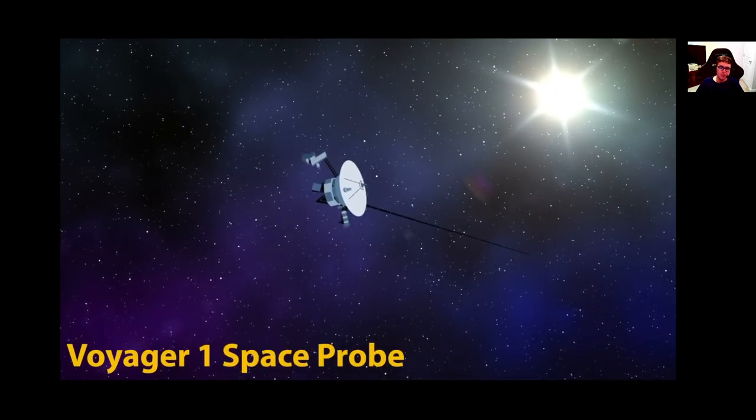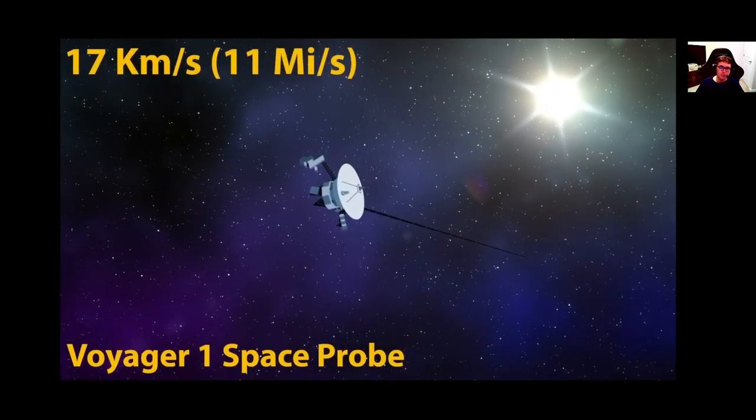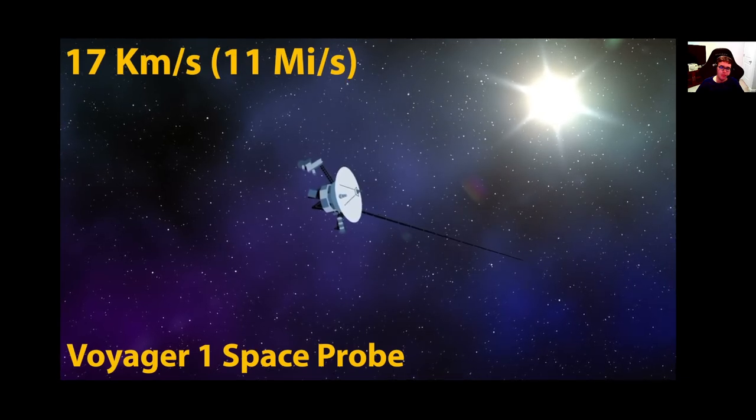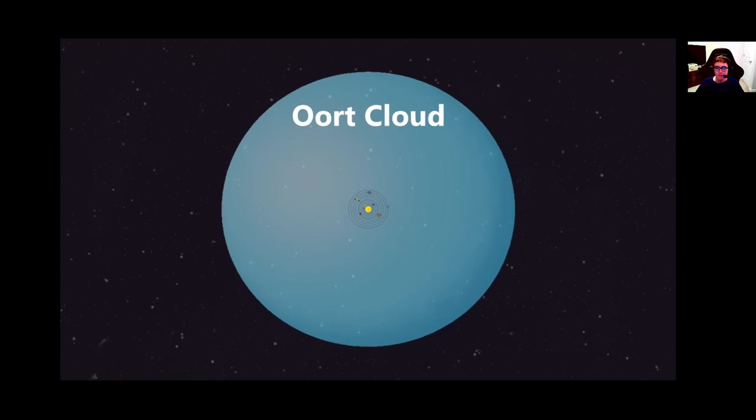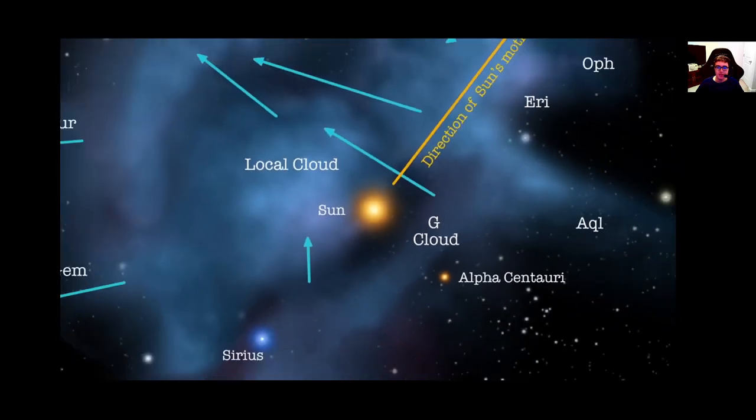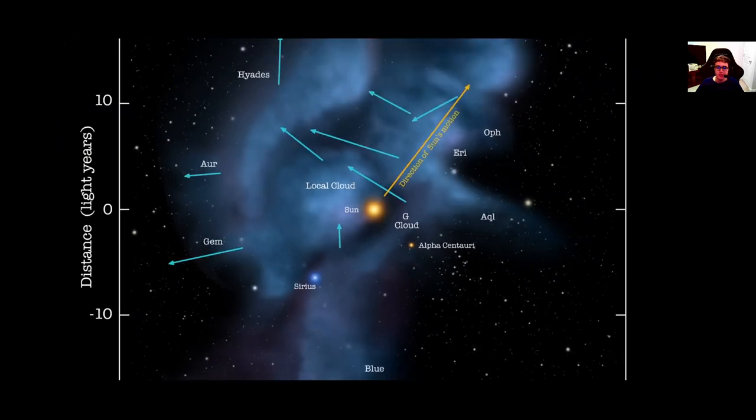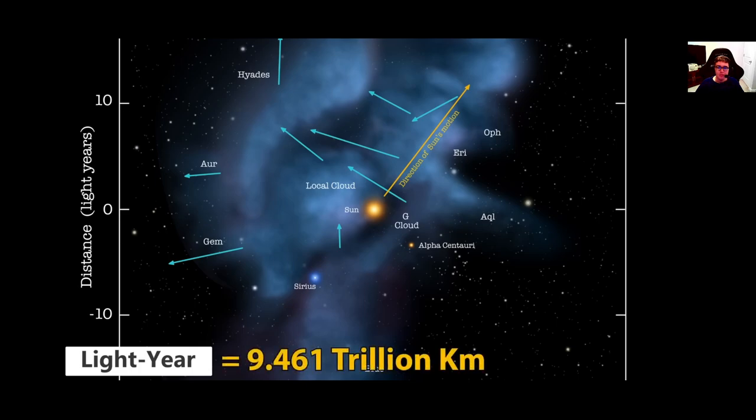Voyager 1 is currently traveling at 17 kilometers every single second. But even at that speed, it won't break out of the reach of our solar system for another 30,000 years. Once we go beyond the solar system, we arrive in our interstellar neighborhood. Here we shift to the light year unit of measurement. Which is the distance that light travels in a full Earth year. Or about 9.461 trillion kilometers.